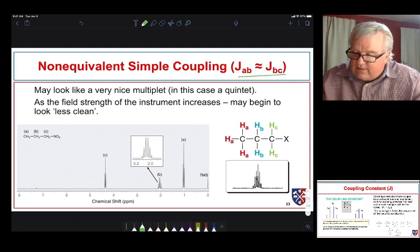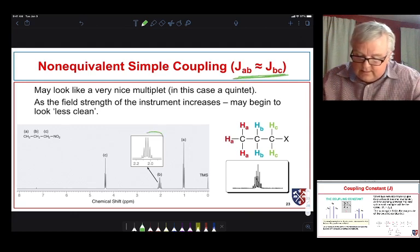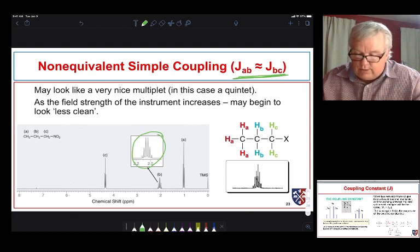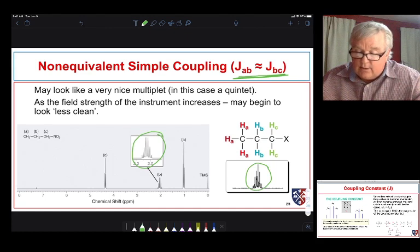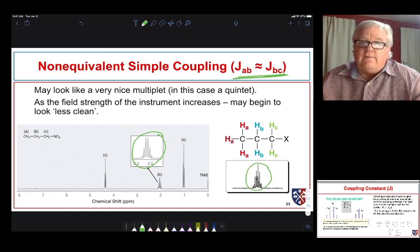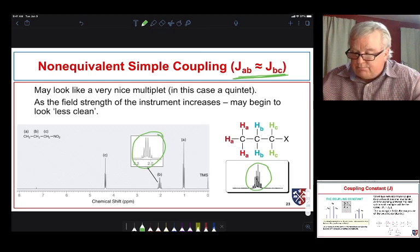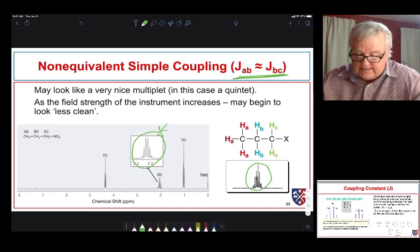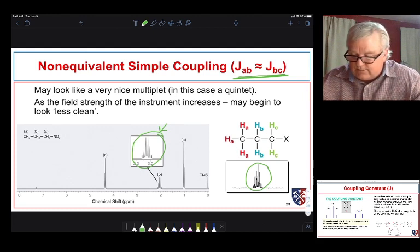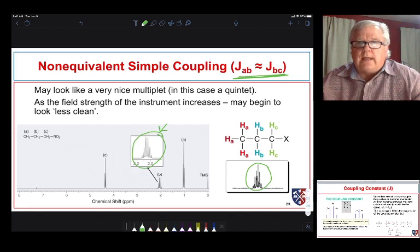When JAB is very, very close to JBC, we see simple coupling when we have a low-field magnet, and we see the coupling get a little bit more complex when we increase the strength of our magnet and go to a higher-field instrument. That's because we're starting to get better resolution, and in fact, we're starting to notice that JAB and JBC are not equal. When we have a low-resolution instrument, we can't refine that, and JAB are roughly equal to JBC, and we see nice simple splitting. With a higher-field instrument, we see more complicated splitting.